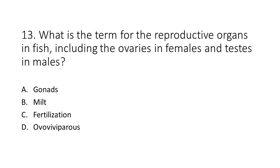Number 13. What is the term for the reproductive organs in fish, including the ovaries in females and testes in males? a. Gonads. b. Milt. c. Fertilization. d. Ovoviviparous.